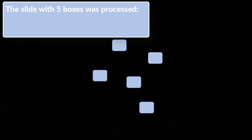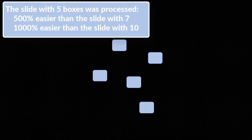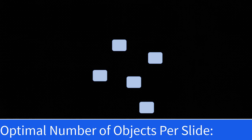Now the last set — almost instantaneous, right? 0.2 seconds. In terms of time, these differences don't seem like much. But measured by cognitive load or cognitive resources required, the slide with 5 boxes was processed 500% easier than the slide with 7, and 1,000% easier than the slide with 10. Multiply that difference over the course of an entire presentation, and you end up with the usual boredom and irritation associated with PowerPoints. So, the optimal number of objects per slide is fewer than 7.